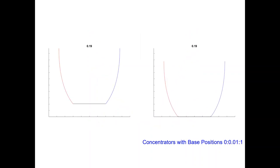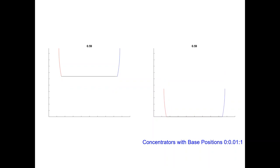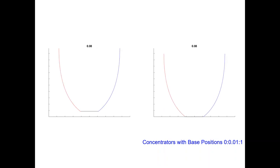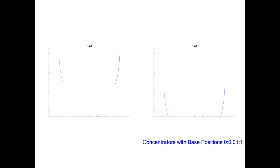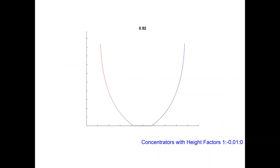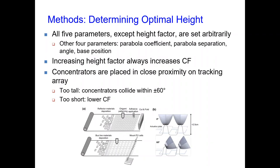The fourth parameter is the base position. As this increases, we move the base of the concentrator upwards. When this has a value of zero, the base is located at the intersection of the two parabolas; when this has a value of one, it is located at the very top of the two parabolas. The final parameter is height factor, which determines how much of the sidewall we include in a concentrator. When this has a value of one, we include the full sidewall; when this has a value of zero, we include none of it. Height factor is dependent on the other four parameters.